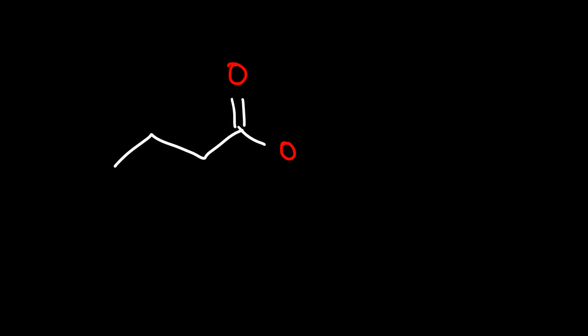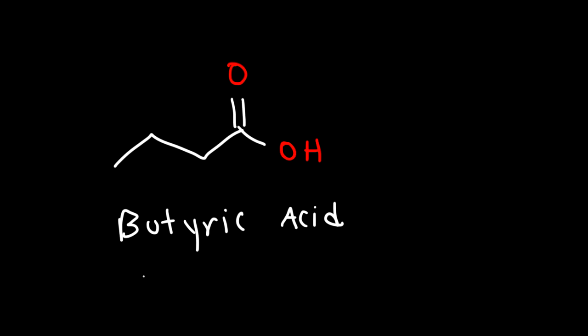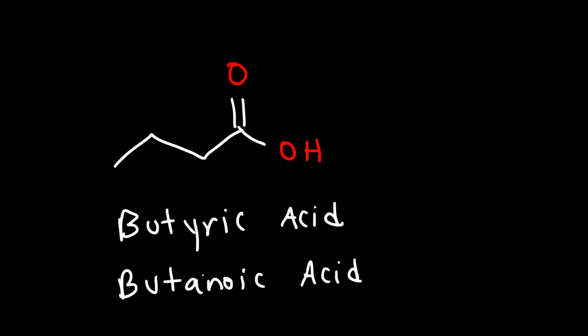Next up we have a four-carbon carboxylic acid. The common name for this is butyric acid and the IUPAC name is butanoic acid since we have a total of four carbon atoms in this molecule.